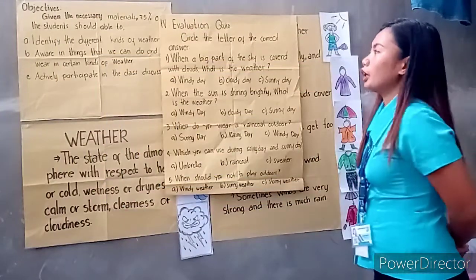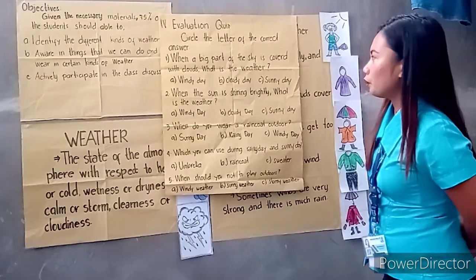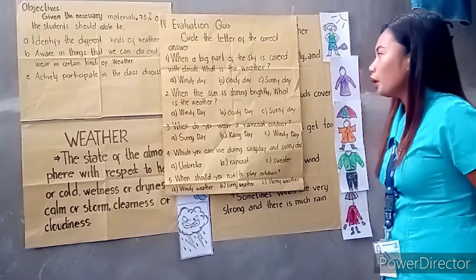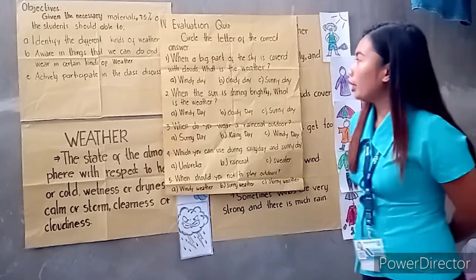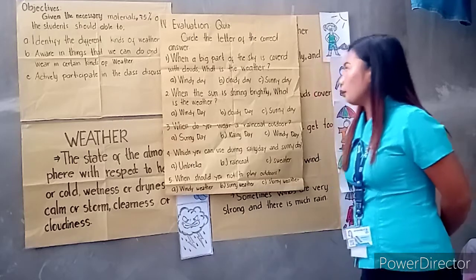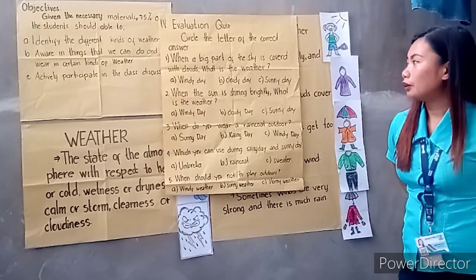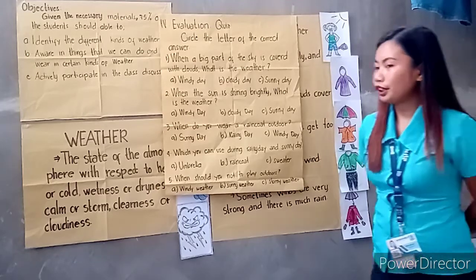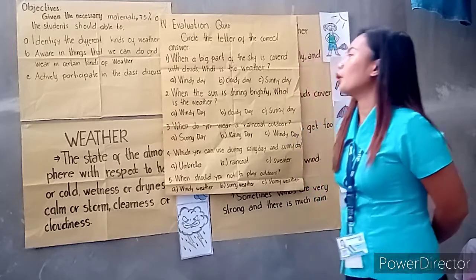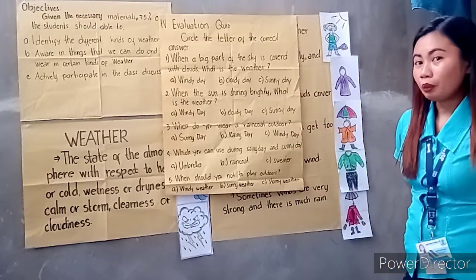Let's check our evaluation paper. Let's begin with number one. Who can read and answer number one? Okay, Ana, thank you. The question is: when a big part of the sky is covered with clouds, what is the weather? The correct answer is letter B, cloudy day. Number two: when the sun is shining brightly, what is the weather? Very good, the weather is sunny day.